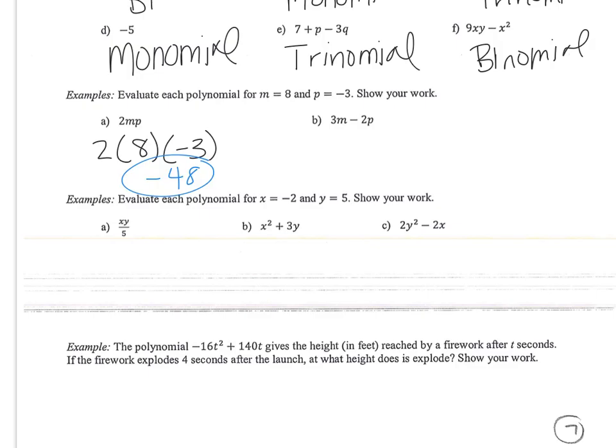And then this one, 3 times 8 minus 2 times negative 3. So order of operations is 3 times 8, which is 24, minus 2 times negative 3 is negative 6. So 24 minus negative 6 is 24 plus 6, which is 30.